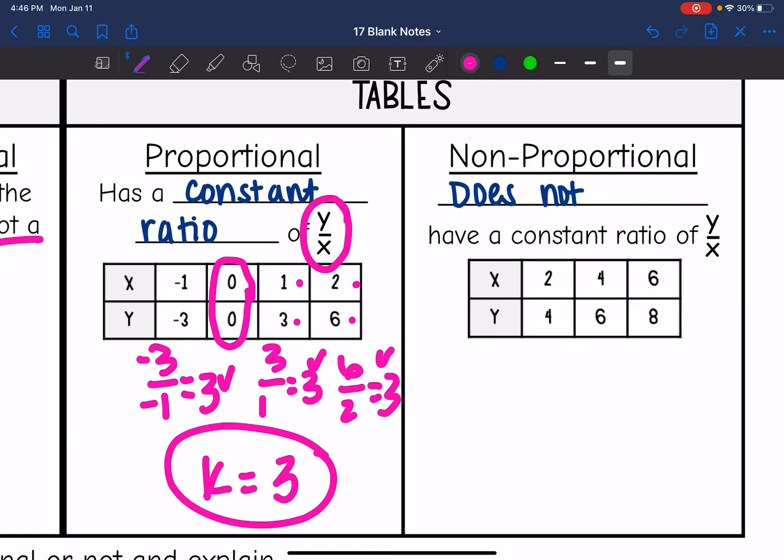Let's look at the next table. If it is non-proportional, then it does not have the constant ratio of y over x. So y divided by x here would be 4 divided by 2, which is 2. And then the next one, 6 divided by 4, simplifies to 3 over 2, which is not 2. Those do not have a constant or same ratio throughout, so that's why this one is non-proportional.